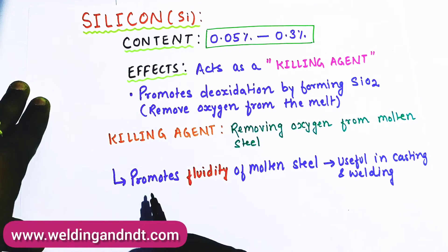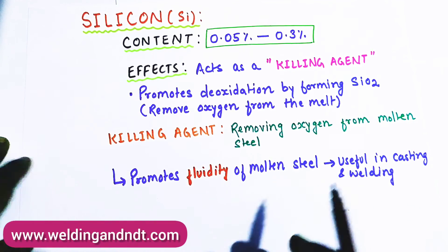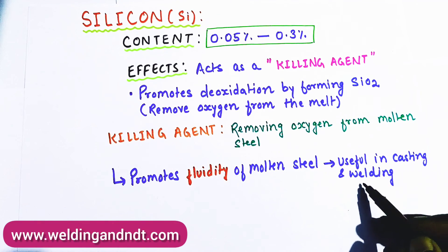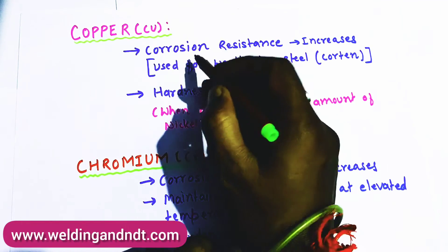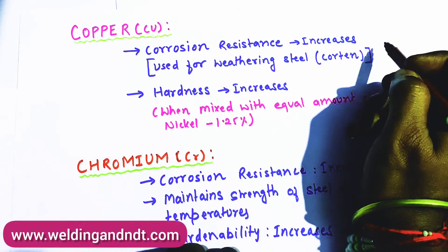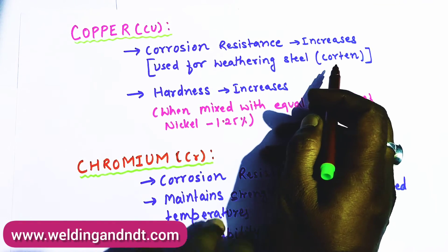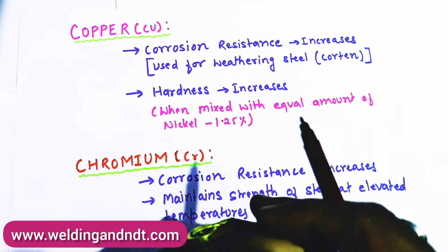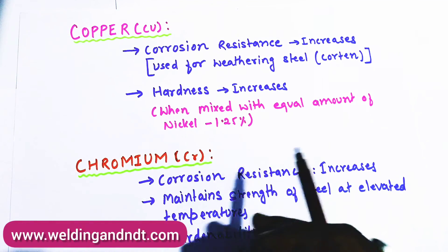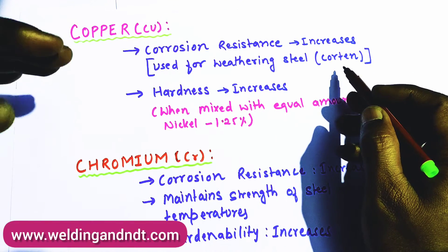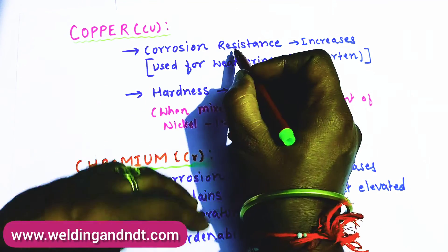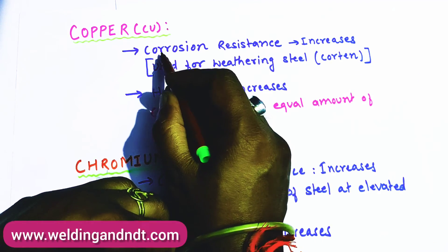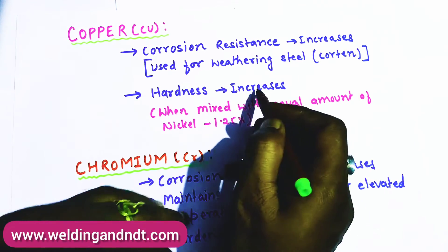Another benefit of silicon is that it promotes fluidity of molten steel. If fluidity is more, it is useful in casting and weldability also increases. After silicon, copper: with copper the corrosion resistance gets increased. It is used for weathering steel, which has more resistivity in a corrosive environment. Hardness also gets increased with copper.